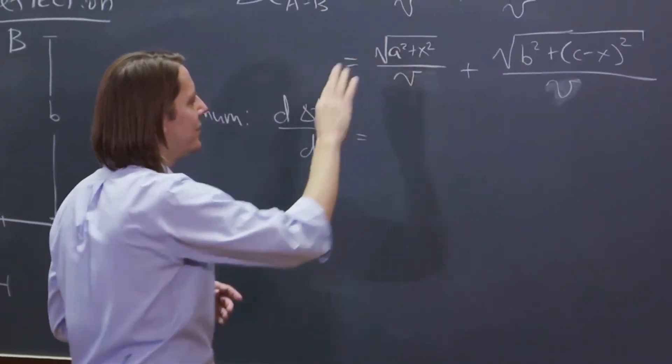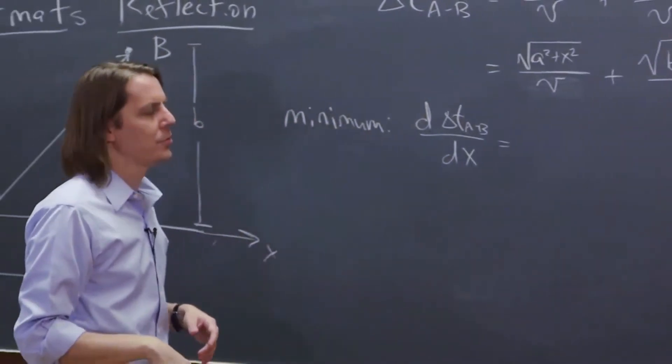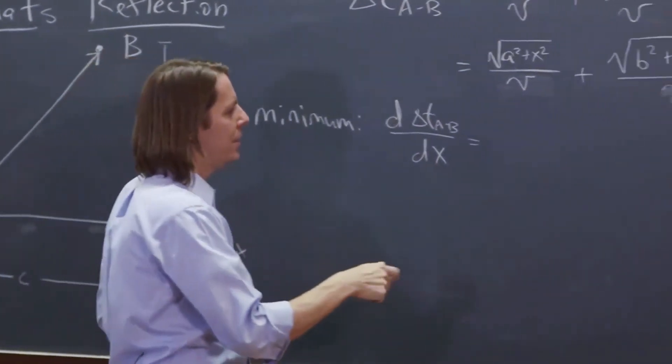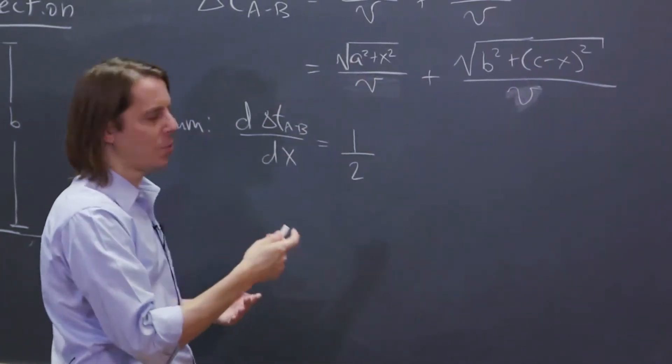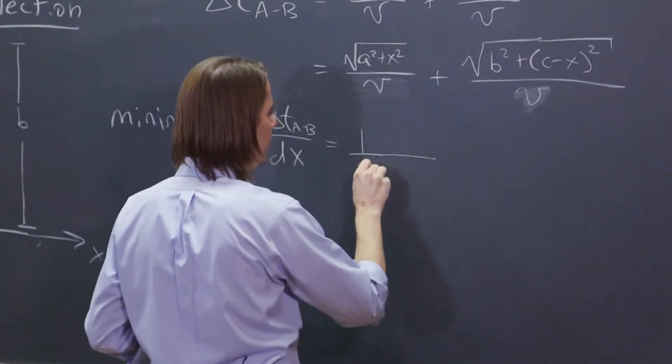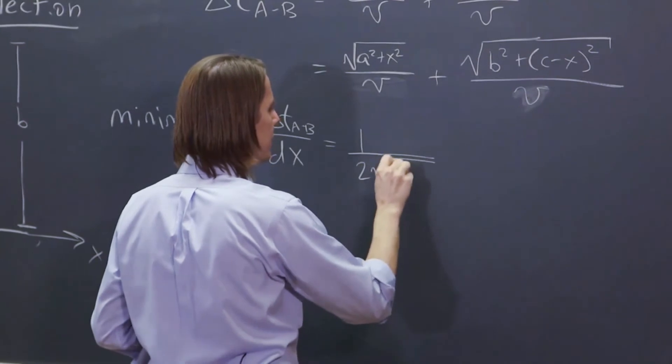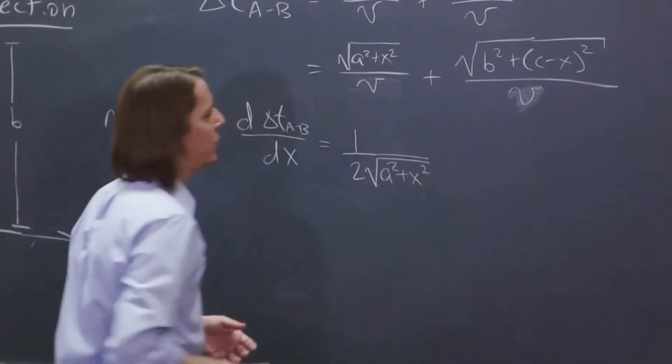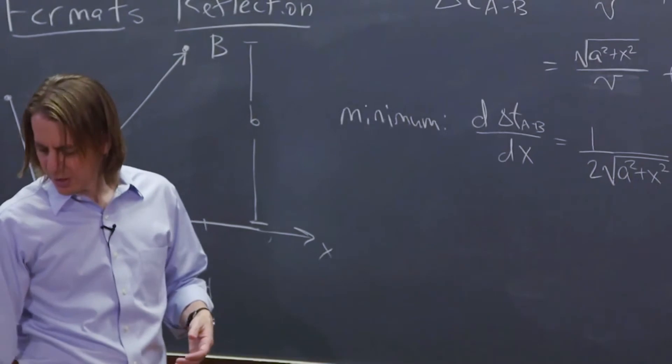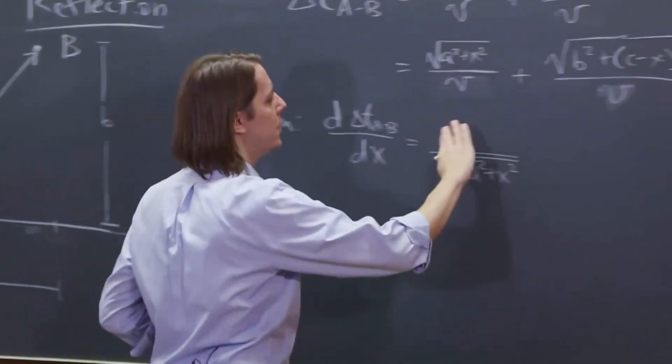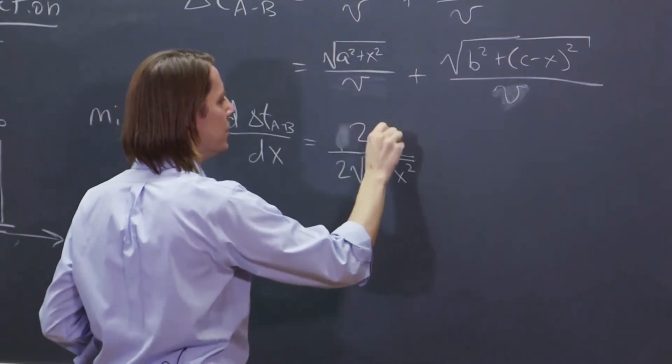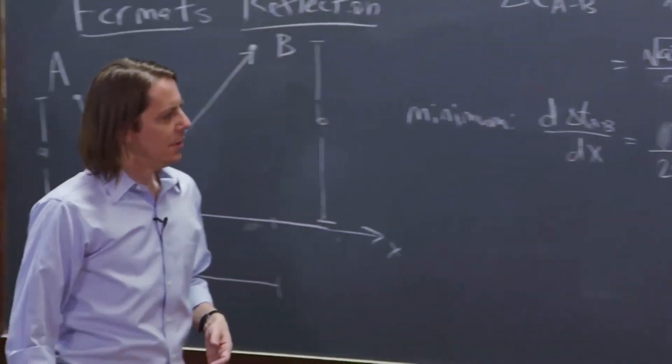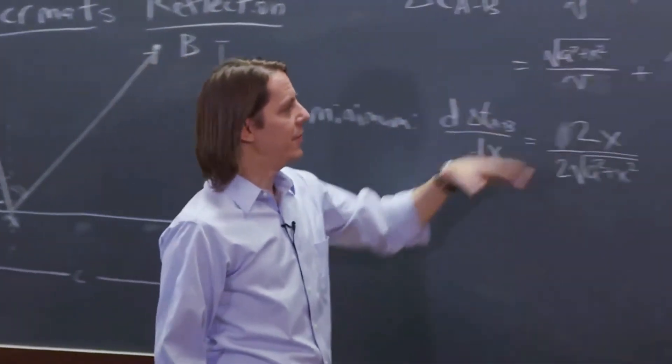So what's this derivative? Well, this is A squared plus X squared to the one-half, so you bring down the one-half, and then it's A squared plus X squared to the minus one-half, which you can write just as the square root in the denominator. So it's A squared plus X squared. And then you've got to multiply by 2X here in the top because that's the derivative of X within the square root like that. So that's the derivative of that part.